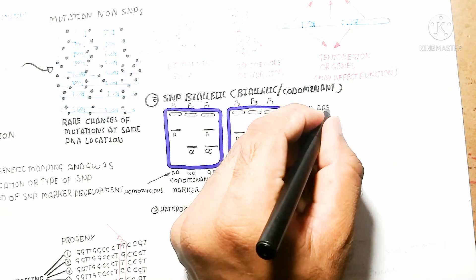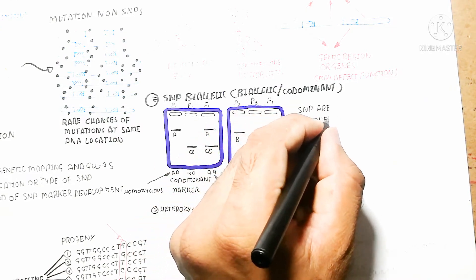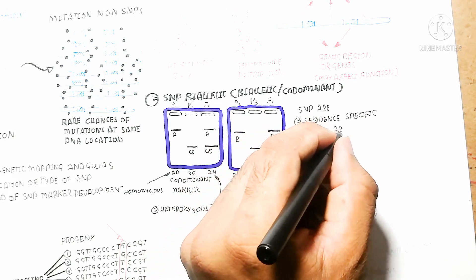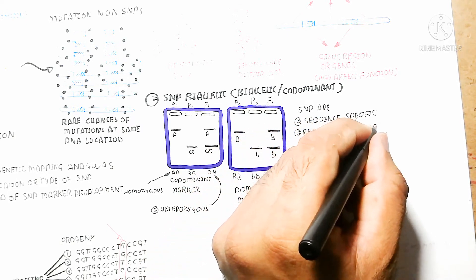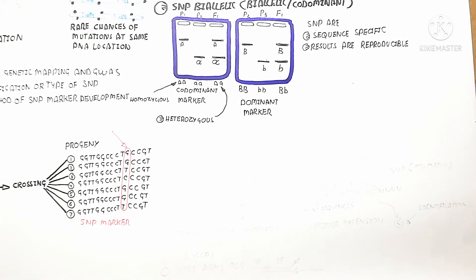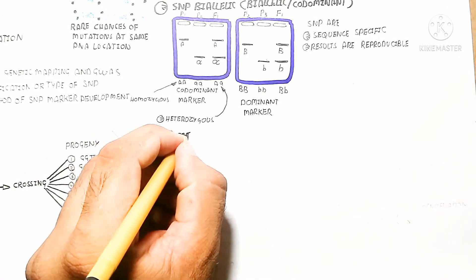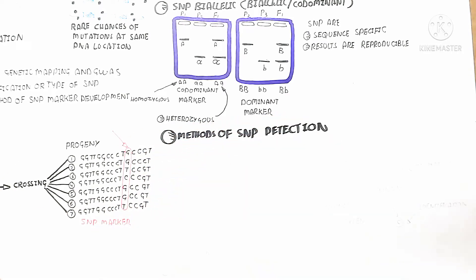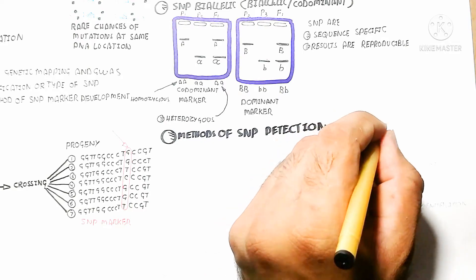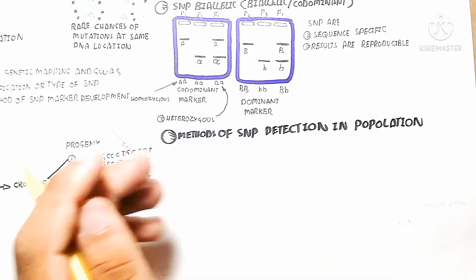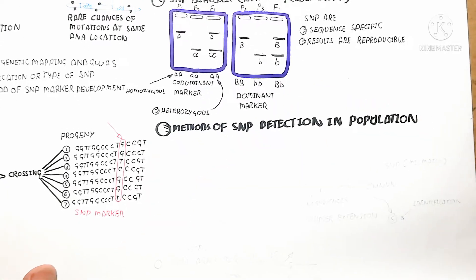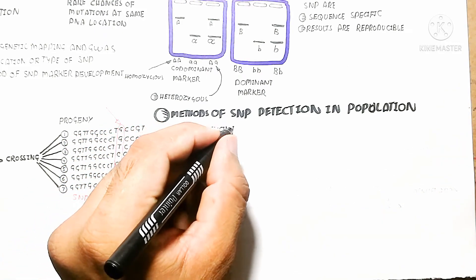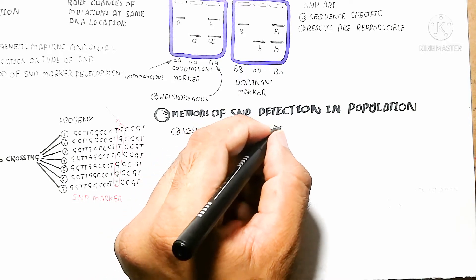When homozygous individuals are crossed to produce heterozygous offspring, both female and male genomes are present in the progeny — compared with both Parent 1 and Parent 2. This heterozygous and homozygous comparison is shown in the figure. The homozygous parent contains the genome from crossing, and this is shown as a dominant marker in the figure.